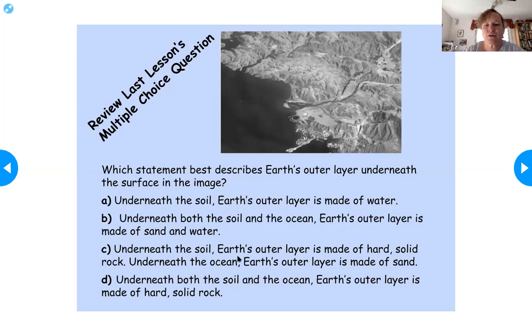So underneath the soil, earth's outer layer is made of hard solid rock. Underneath the ocean, earth's outer layer is made of sand. We also know if you drill down far enough, you will find hard solid rock both under the ocean and under the continents.